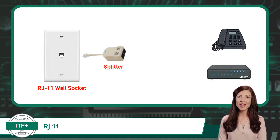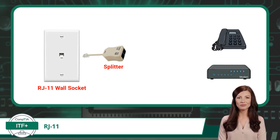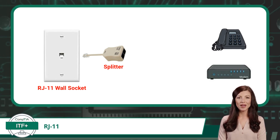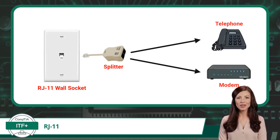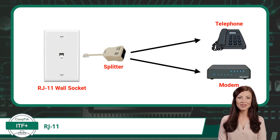Next, we have a splitter. This is specific to a DSL installation, as it separates internet and telephone traffic. For telephone or dial-up services, you would not have needed a splitter, as you would just run an RJ11 cable directly to the telephone or dial-up modem. Continuing with our DSL installation, you would run two separate RJ11 cables from the splitter: one to the telephone and one to the DSL modem.